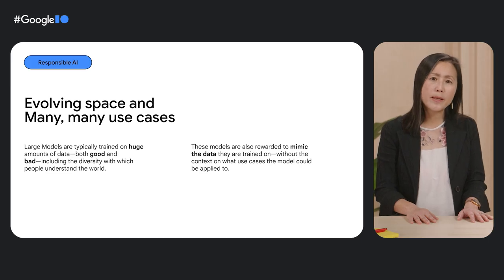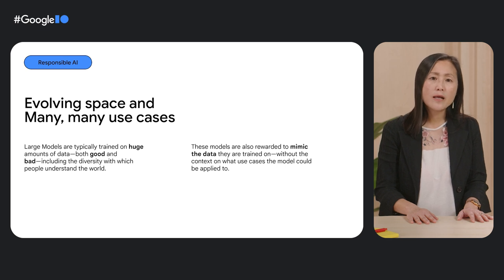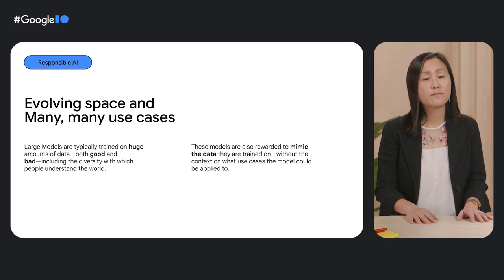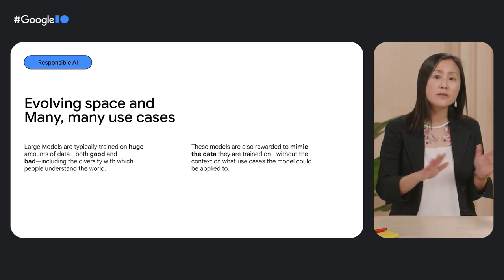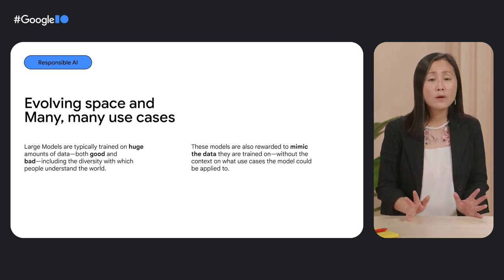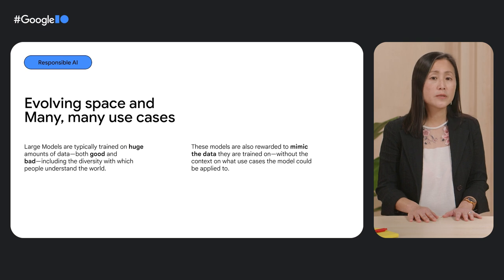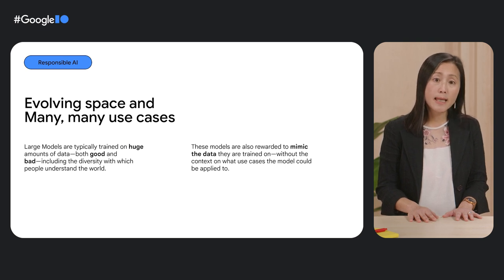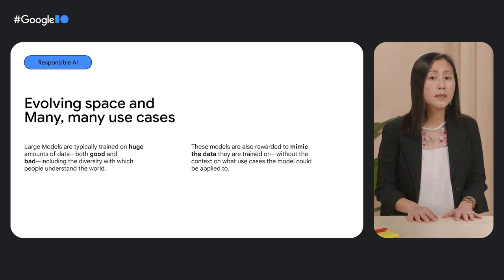Let's understand where some of these flaws might be coming from. Most LLMs are trained on very large, huge amounts of data, and that includes both the good and the bad. That data includes varied viewpoints with the range and diversity with which all people understand the world. Large models are initially trained to mimic the content they were trained on. In other words, the methods used to build these models reward it to be like the data it's trained on, often without understanding the context on what use cases the model could be applied to, of which there are many, as we've seen.